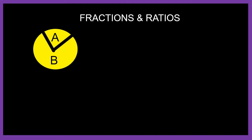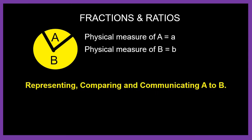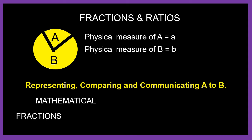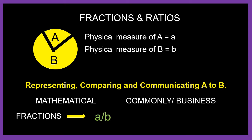As shown in the figure, the physical measures of A and B of the same type are small a and small b. Mathematically, A by B can be represented as a fraction — small a by small b — meaning for every B quantities, there is A quantities. It is also represented as a ratio A is to B, and you can convert the ratio back into fractions for problem solving in mathematics.